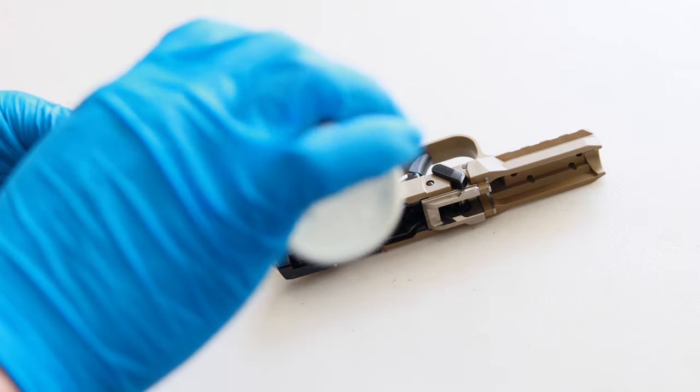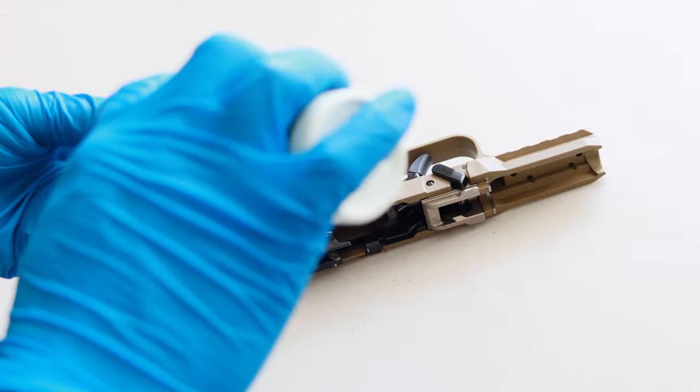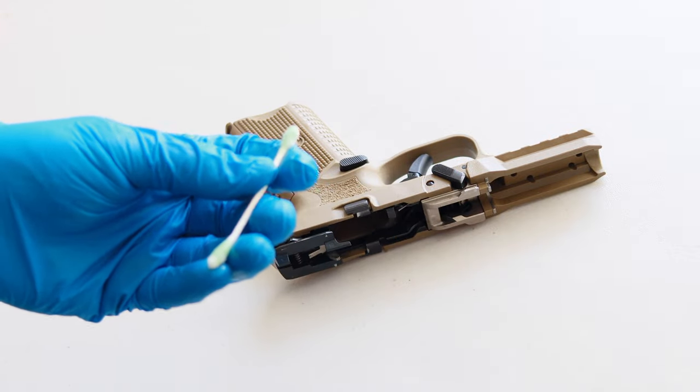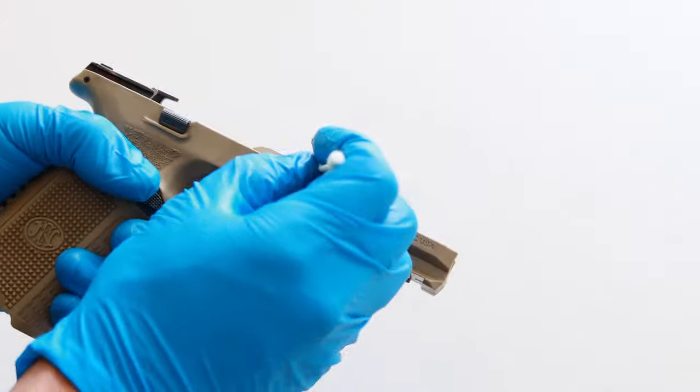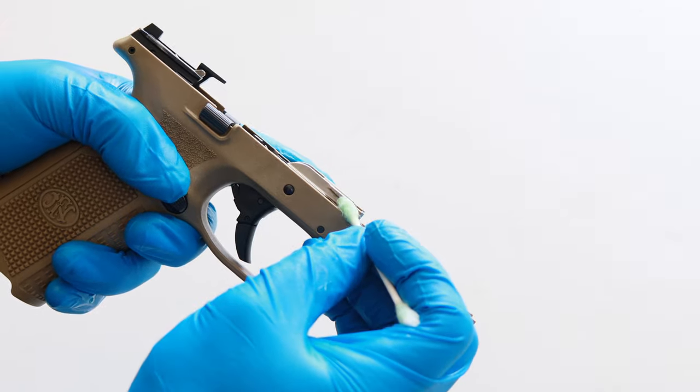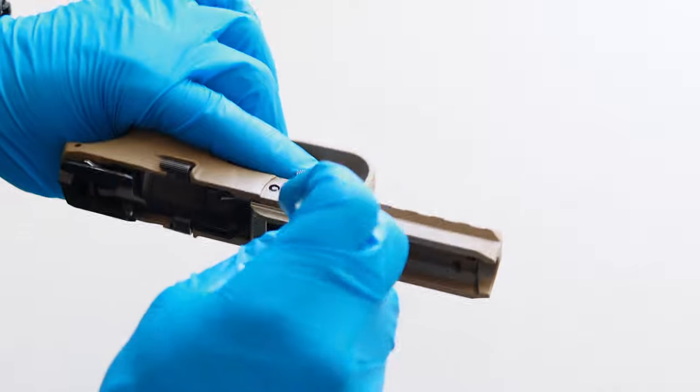Just make sure you're not using so much CLP that it's actually running off of the gun. If you use too much, it could interfere with the function of the pistol. But don't get too caught up in the amount of CLP you're using. Just a light to medium coat is fine, and it's not an exact science.